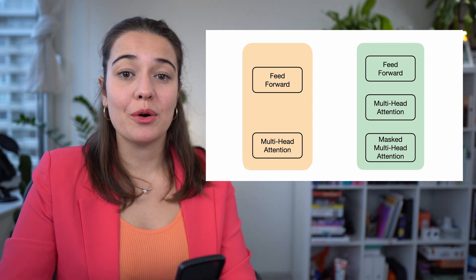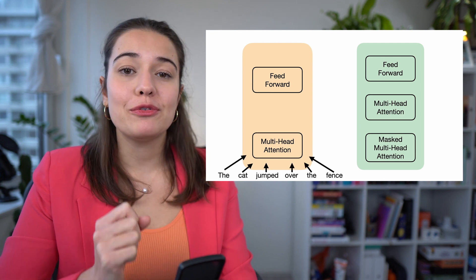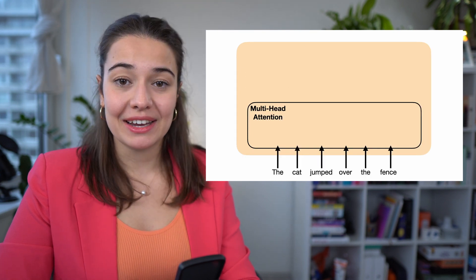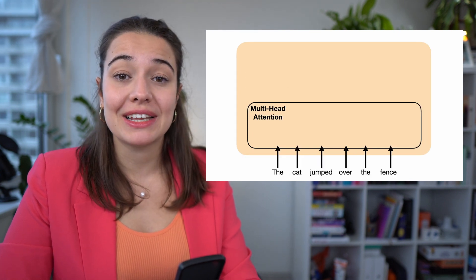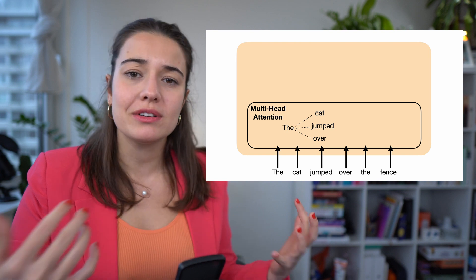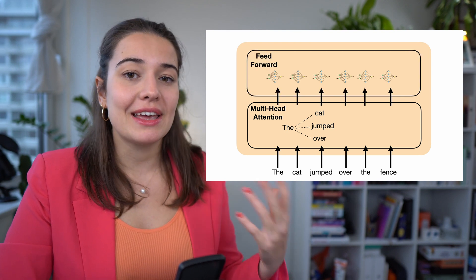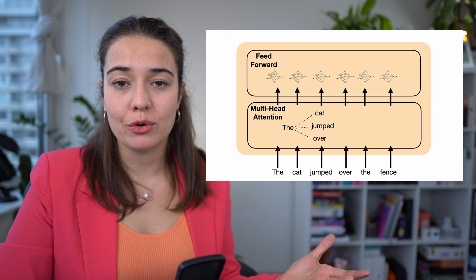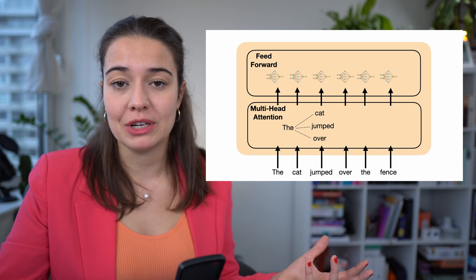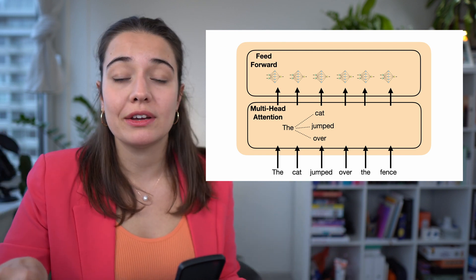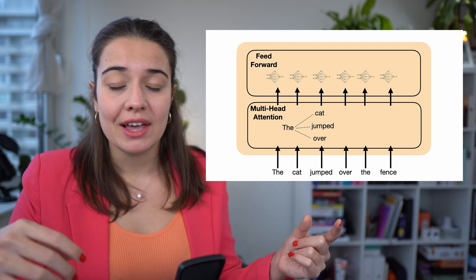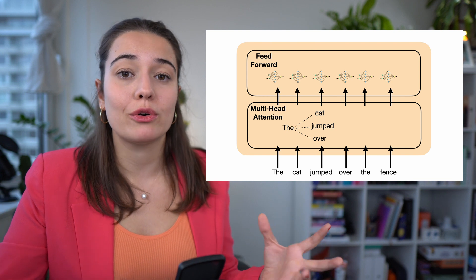The parallelization comes from how we feed the data into the network. We feed all the words of the sentence at the same time to the encoder. Inside the self-attention sub-layer, all the words are compared to all the other words — there is communication between them. In the feed-forward neural network step they are passed through separately, with no information exchange. The feed-forward networks within the same layer are shared, but across the six encoders the networks are different.